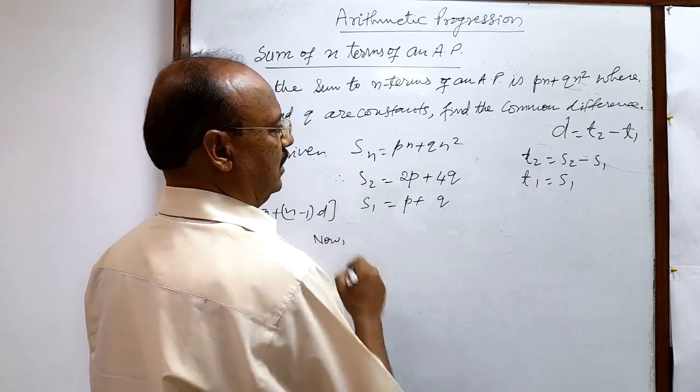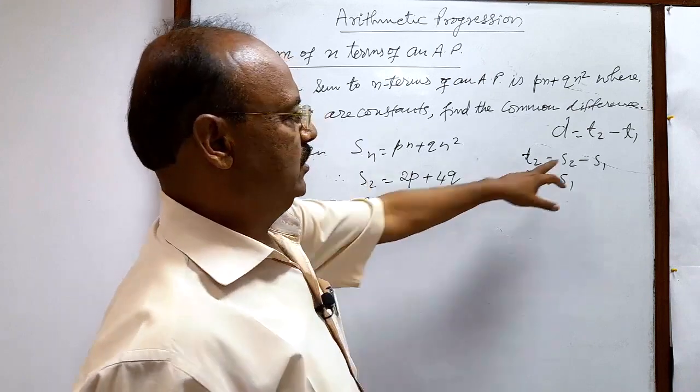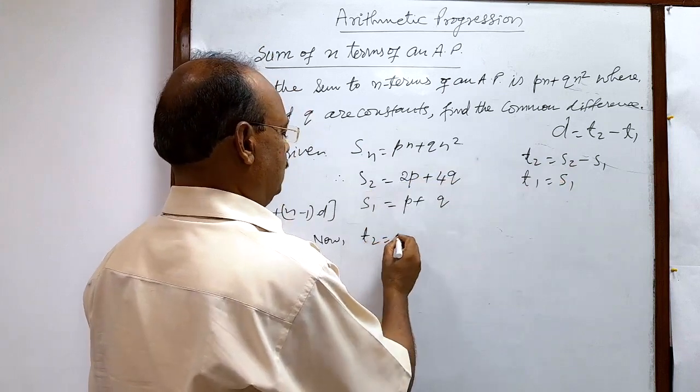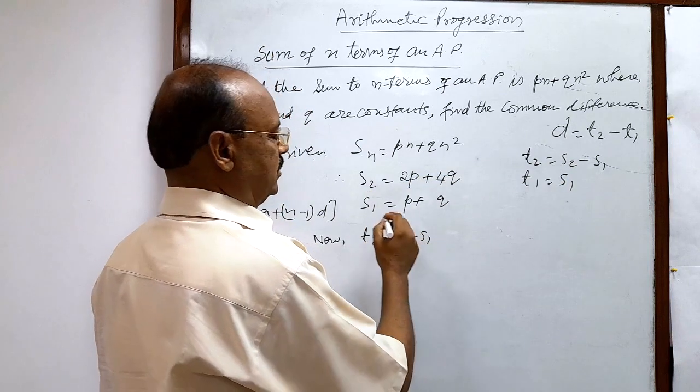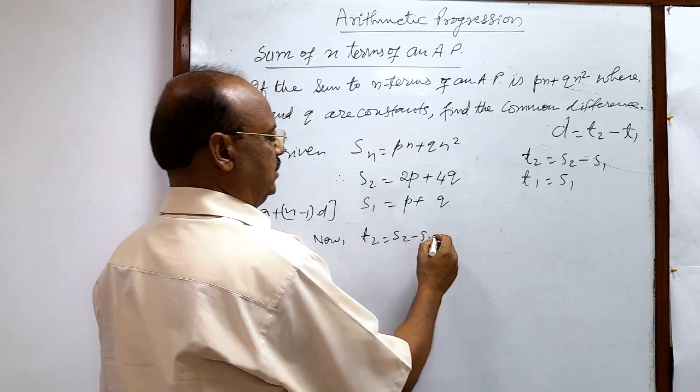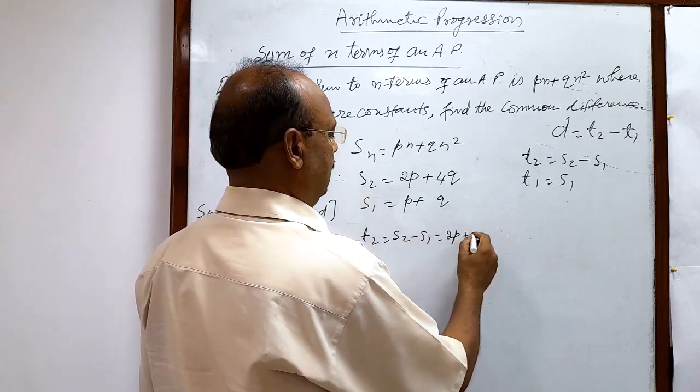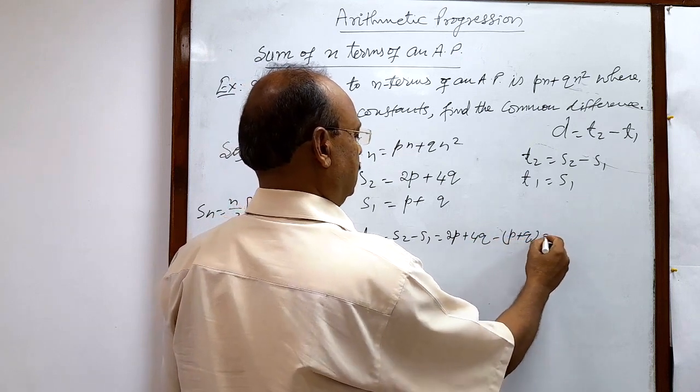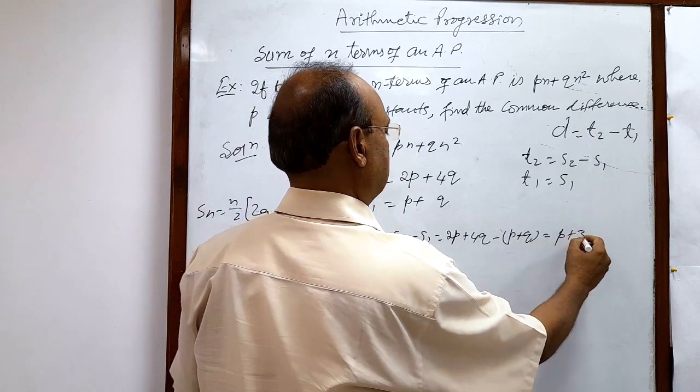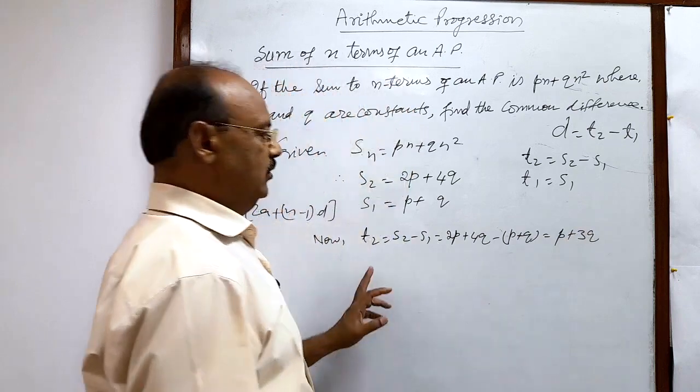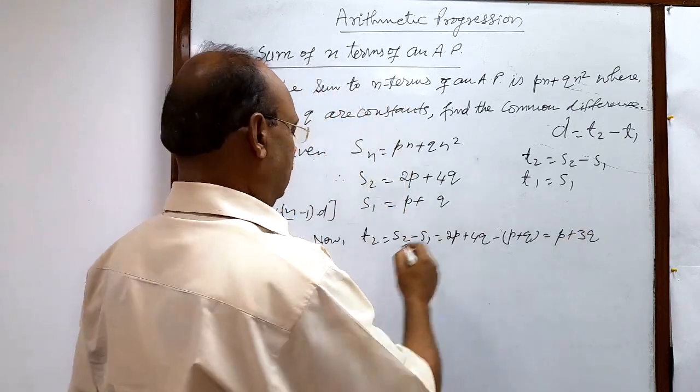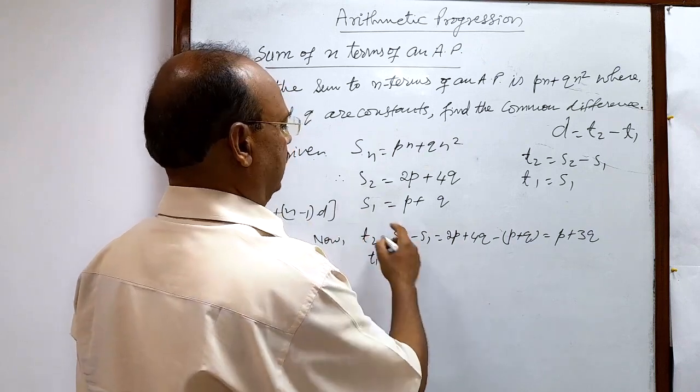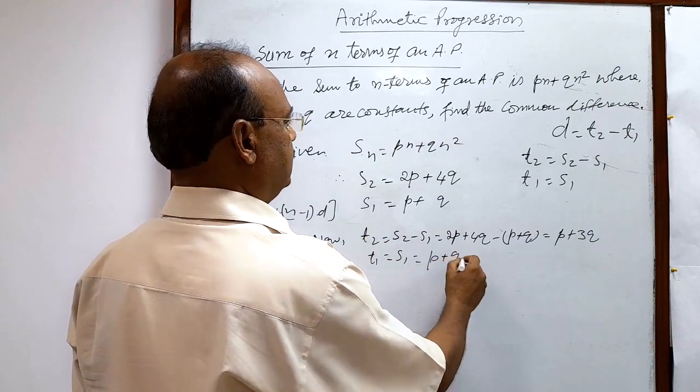Now we can get S2 minus S1 that will be equal to t2. So t2 is equal to S2 minus S1, and S2 is 2p plus 4q minus p plus q. So this is p plus 3q, this is value of t2. And value of t1 will be how much? Value of t1 is simply S1, and S1 is p plus q.